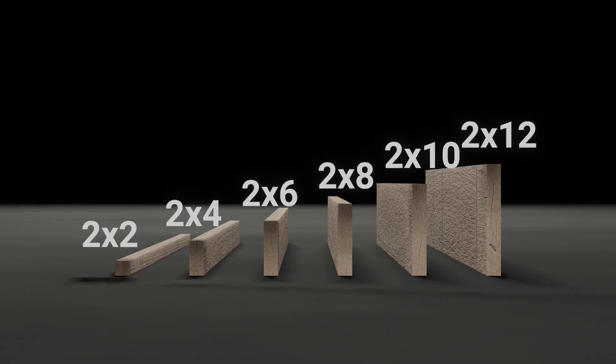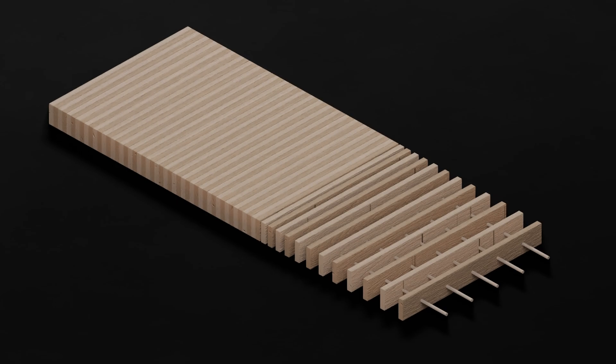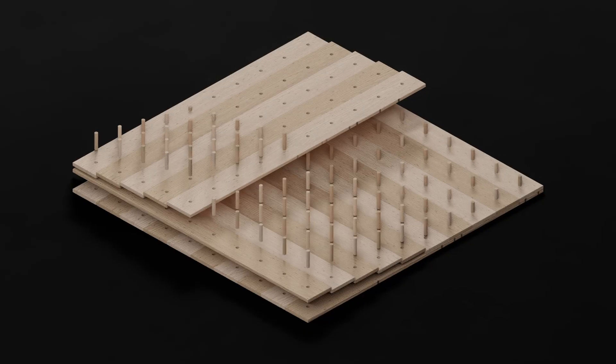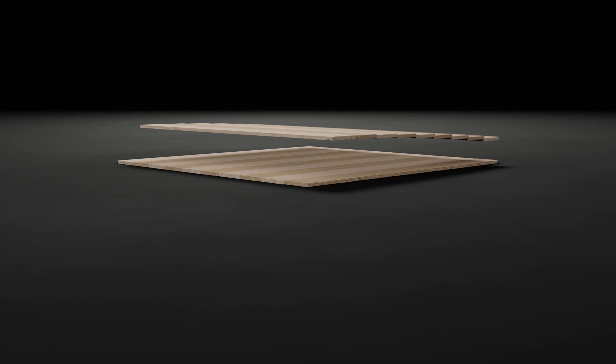Wood acts as a carbon sink and is the only renewable construction material. DLT uses standard dimension timber which is widely available and very cost-efficient. Apart from being able to dowel laminate dimension timber together when stacked on its edge, you can also dowel laminate it whilst cross-layering it, just like cross-laminated timber.